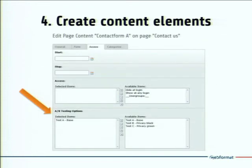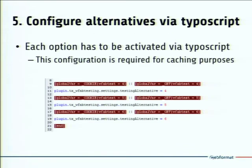You can create three content elements on the same Contact Us page and assign each content element to the AB testing record. On the backend, when creating a content element, you will find a new field on the Access tab where you can specify that this content element is to be shown only when providing a specific version of the page. So on the same page you have three contact forms, and each will be provided only when a specific version is requested. You also have to configure conditions in TypoScript, which are necessary for caching purposes — just to avoid disabling caching entirely.